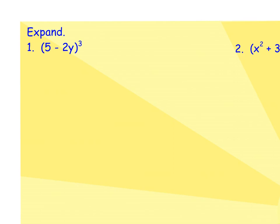For the second part of the 10.2 day 2 notes, we have two more binomial expansions, and then we're going to do a little work with finding one specific term within an expansion. Here's our first example, 5 minus 2y to the third power. This means we're in row 3 of Pascal's triangle, and that indicates that we're going to have four terms.